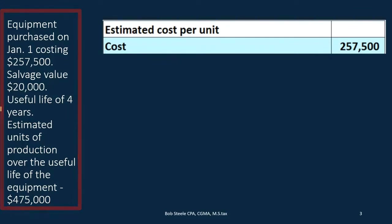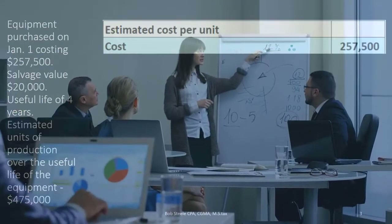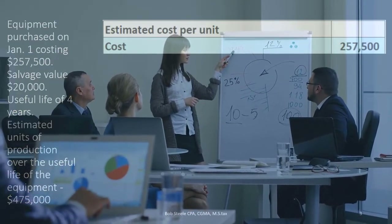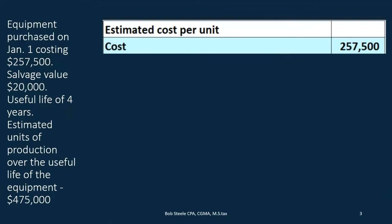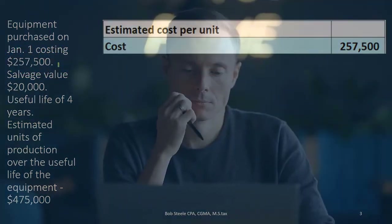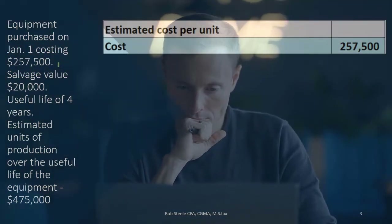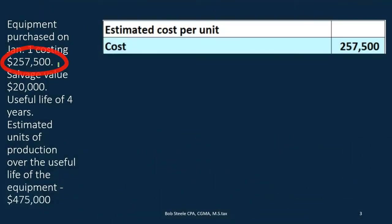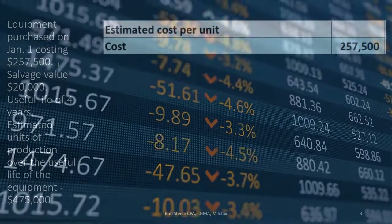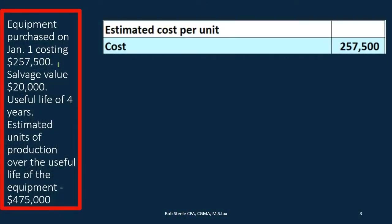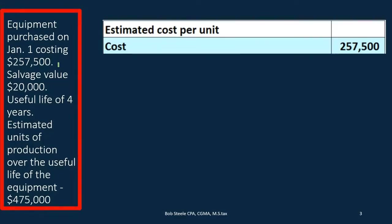In the past, we have calculated depreciation using the straight-line method — the most common-sense approach, dividing cost over useful life. The problem is that if we just expense the full $257,500 when we buy the equipment, it will greatly reduce net income at the time of purchase, which does not match the accrual principle of matching the expense to the revenue it helped generate.